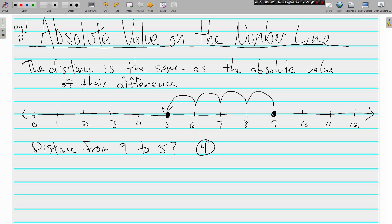But what this tells us, as far as absolute values, is that the absolute value of 9 minus 5 is going to be 4. The distance between the two numbers is 4, and the absolute value of their difference is 4.